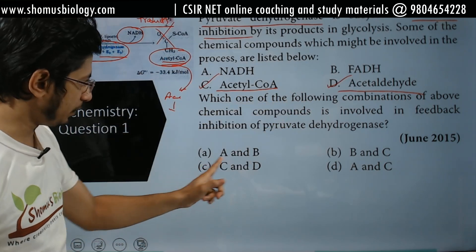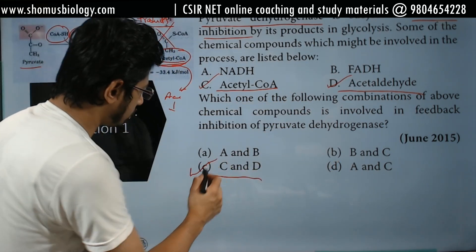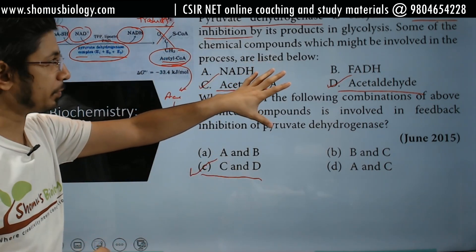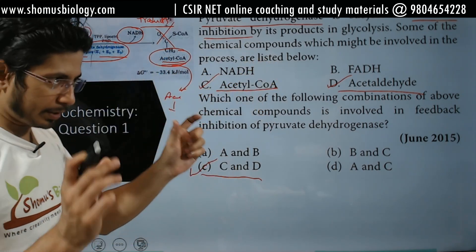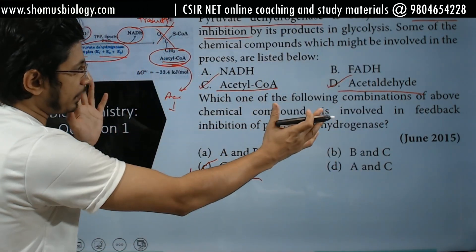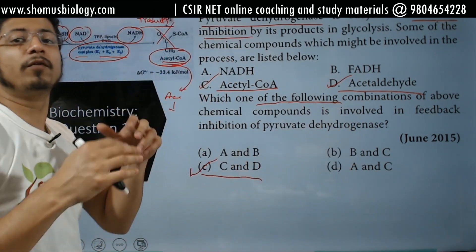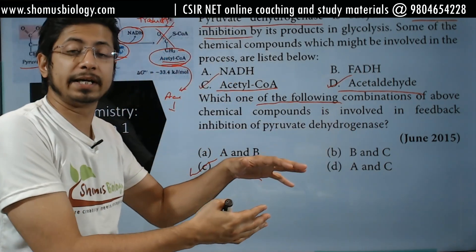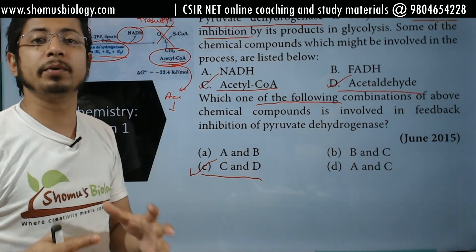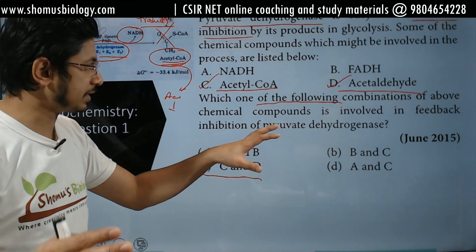So C and D should be the answer. If you look at the options, option C comes with C and D, so the answer should be option C. This is the easy way to answer this question. Now, this question is framed as a 'which of the following is correct' type. There are multiple types of CSIR NET Part C questions. If you want to know the different types, we have a separate video on that — you can watch that.